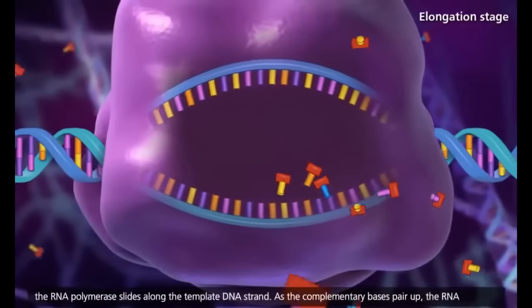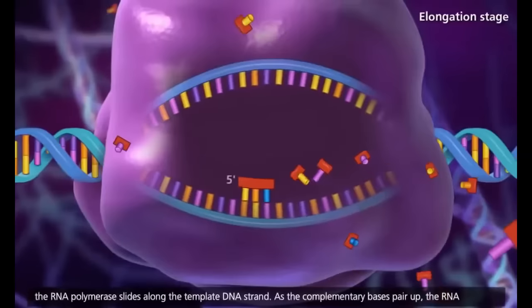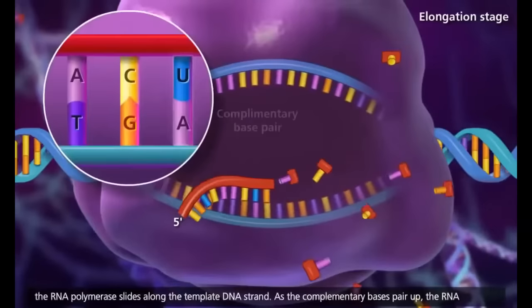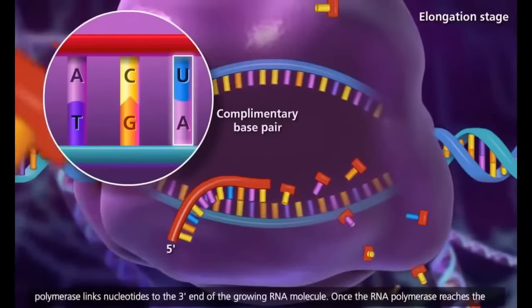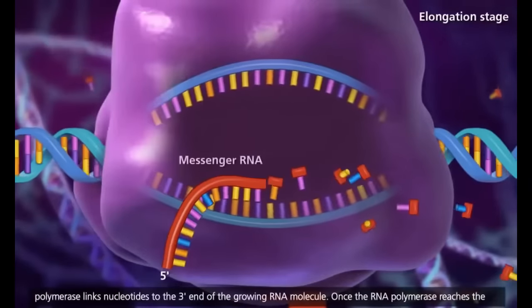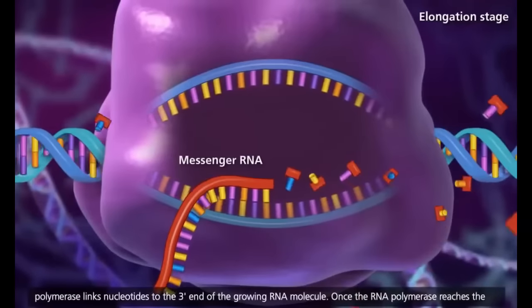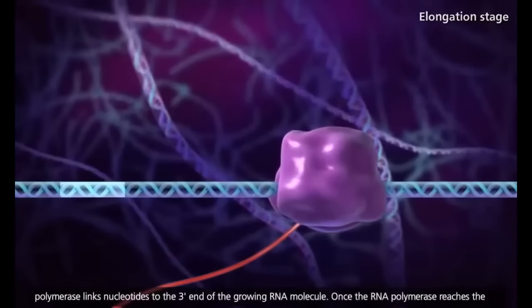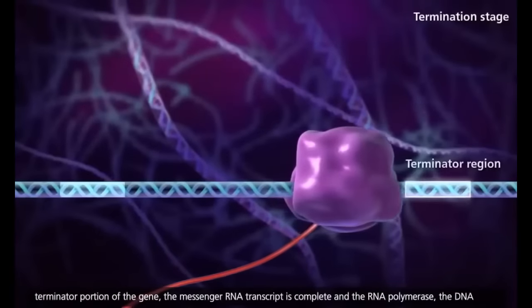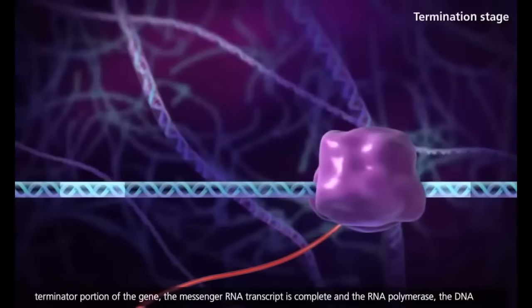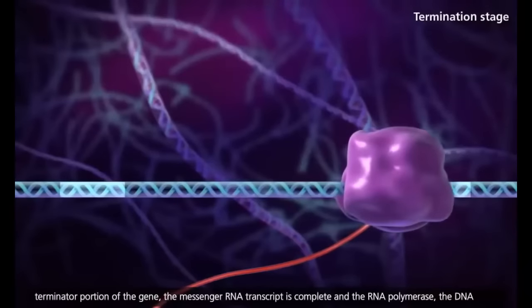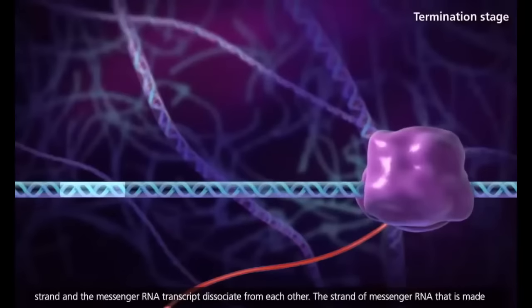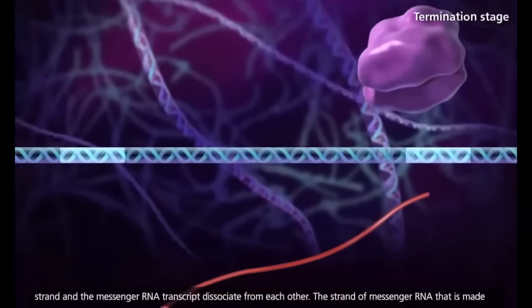Then during elongation, the RNA polymerase slides along the template DNA strand. As complementary bases pair up, the RNA polymerase links nucleotides to the 3' end of the growing RNA molecule. Once the RNA polymerase reaches the terminator portion of the gene, the messenger RNA transcript is complete, and the RNA polymerase, the DNA strand, and the messenger RNA transcript dissociate from each other.